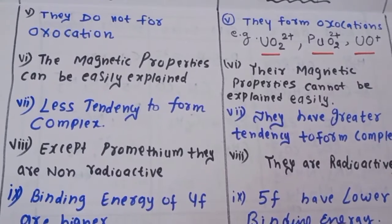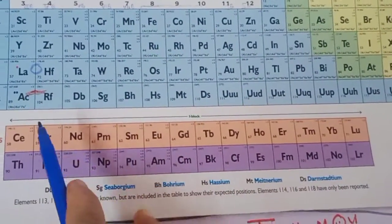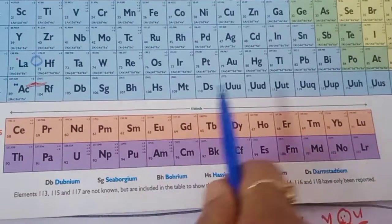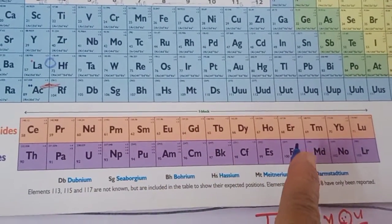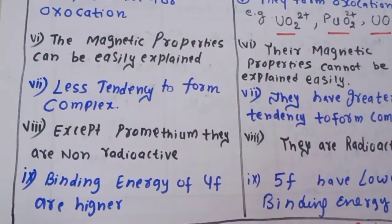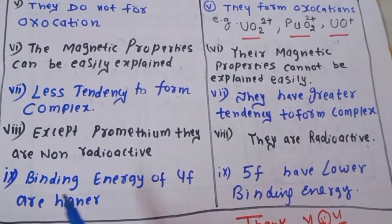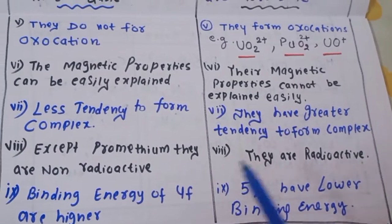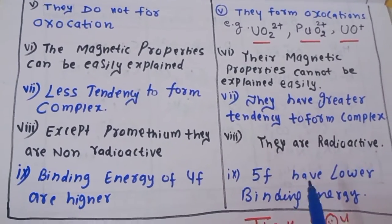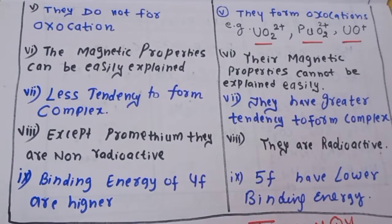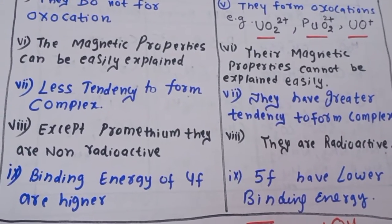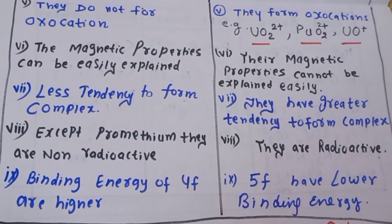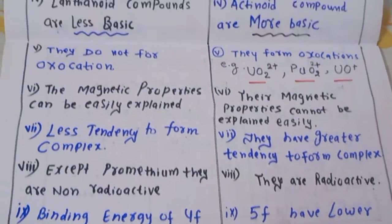Seventh difference: in the lanthanide series, all elements except promethium are non-radioactive; promethium alone is radioactive. On the other hand, most actinides are radioactive in nature. Eighth difference: the binding energy of 4f orbitals (lanthanides) is higher, while the binding energy of 5f orbitals (actinides) is lower.